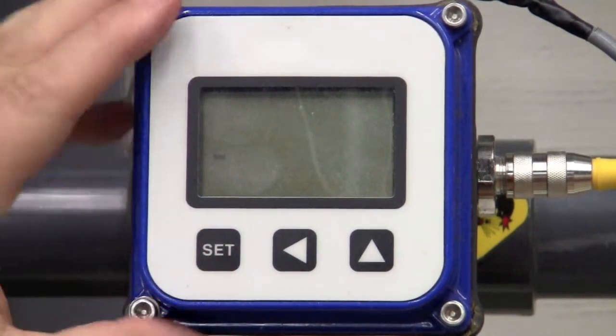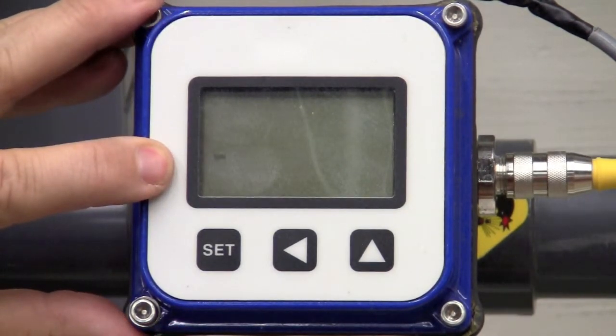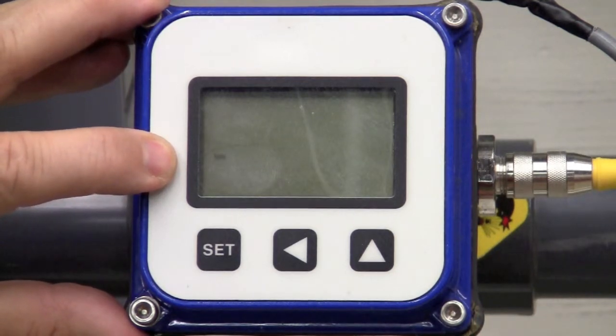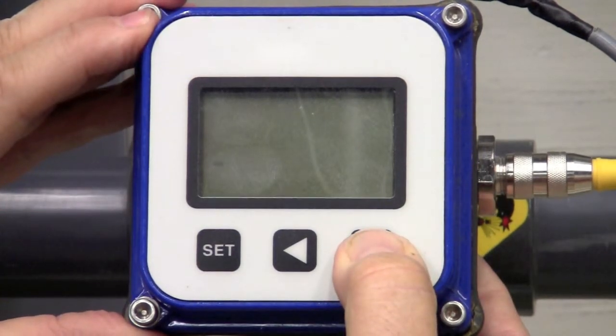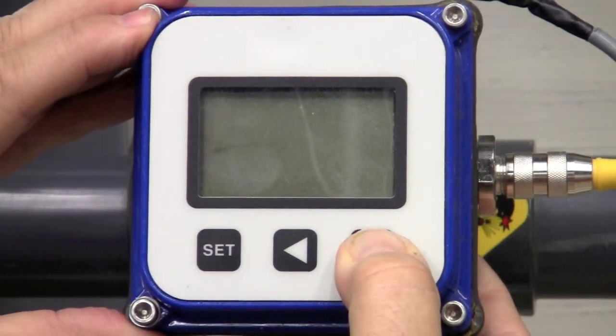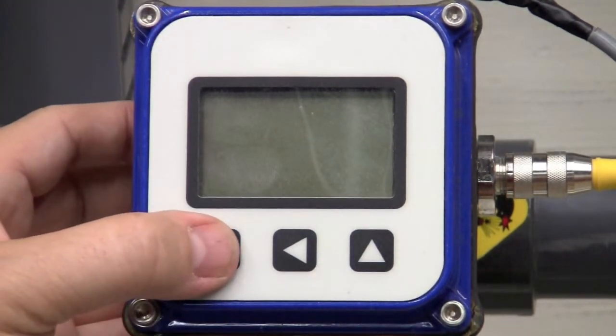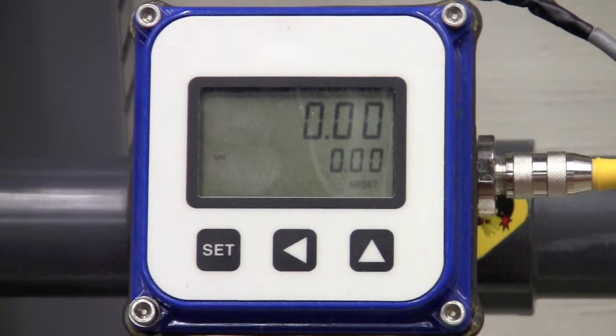Finally, the last parameter you put in is your engineering units. Right now, I'm in gallons per minute, and you see it flashing. If you wanted, you could change that to gallons per second, gallons per day, million gallons per day, by just going with the up arrow key, and when it gets back to minutes, you leave it alone, and you hit Set, and you're back to your main display.